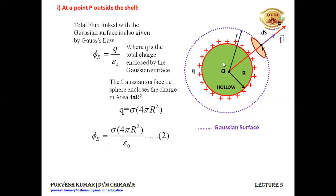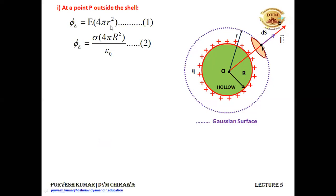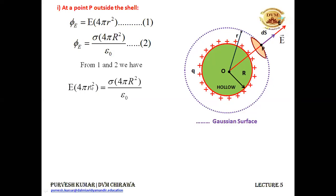Q equals sigma times A, and in place of A we write 4 pi capital R squared because that is the surface area of the thin spherical shell. So this becomes equation 2: the flux by Gauss's law is sigma times 4 pi capital R squared upon epsilon naught. Equating equations 1 and 2: E times 4 pi small r squared equals sigma times 4 pi capital R squared upon epsilon naught. The 4 pi cancels, leaving E equals sigma capital R squared upon (small r squared times epsilon naught).